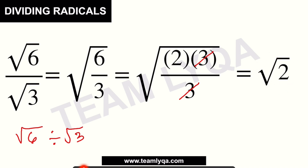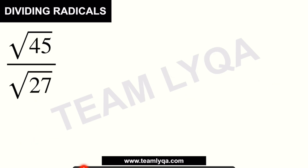So the steps we took: we combined them under one radical, factored the numbers, cancelled common factors, and what remained is the answer. Now, what if we have something a bit more complicated with larger numbers?